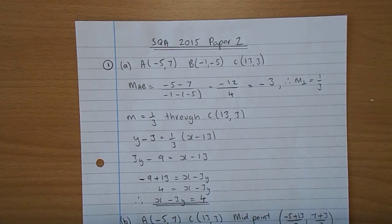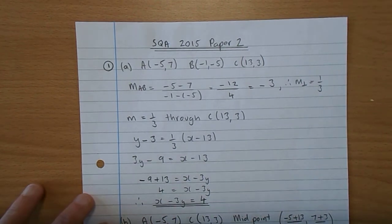And we have to show that the equation of the altitude from C is X take 3Y equals 4. Okay, well, the altitude from C hits AB at a right angle, so we need to get the gradient from A to B.